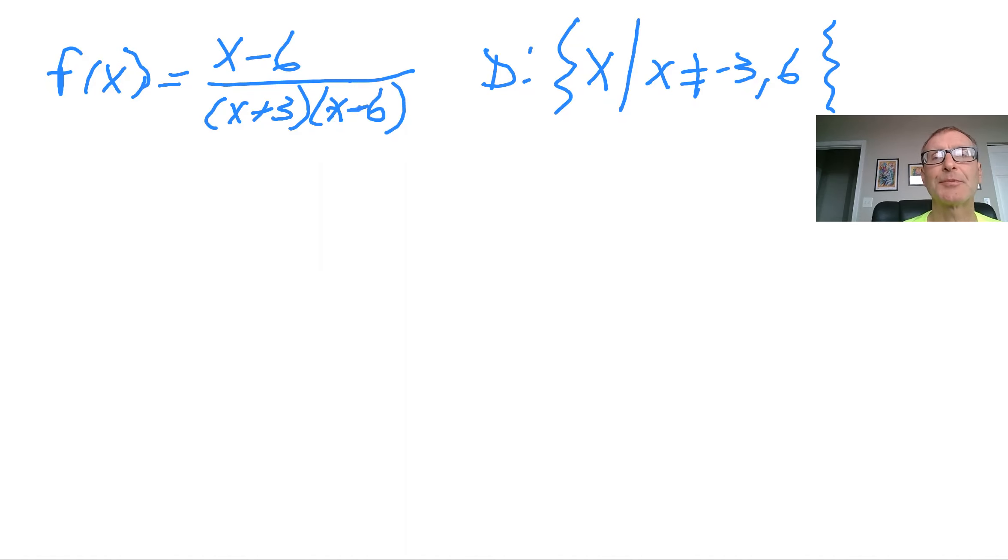And so the next thing would be this is not in its simplest form, right? So to get it in its simplest form, what you want to do is cancel the common factors that we have here. And so the simplest form, I'll rewrite it in green, is 1 over X plus 3.